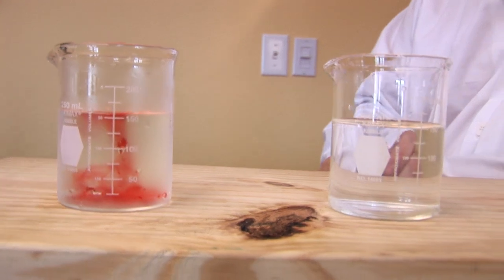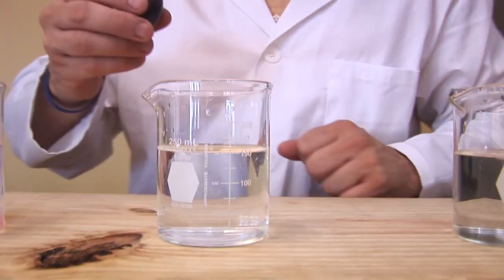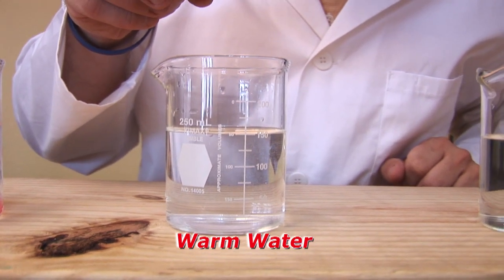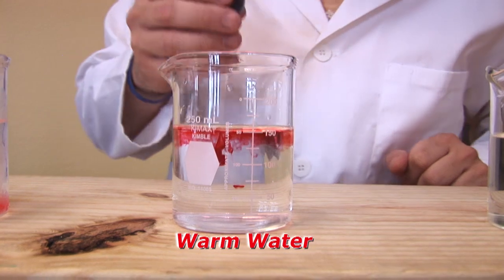Beaker 2 will hold warm water. Then we place food coloring in the beaker and observe what happens.